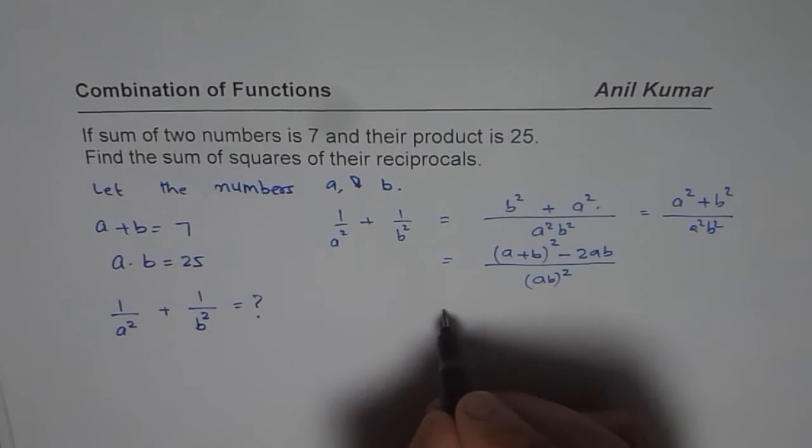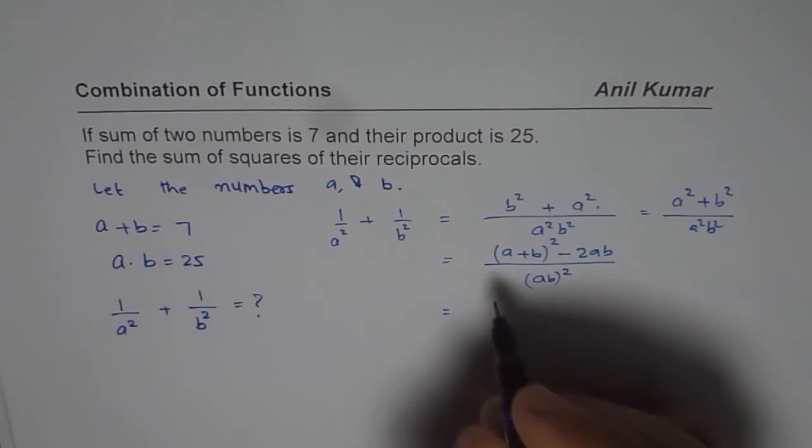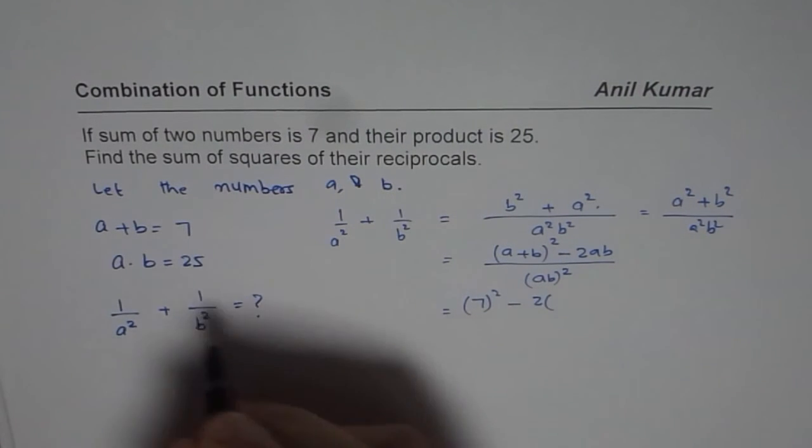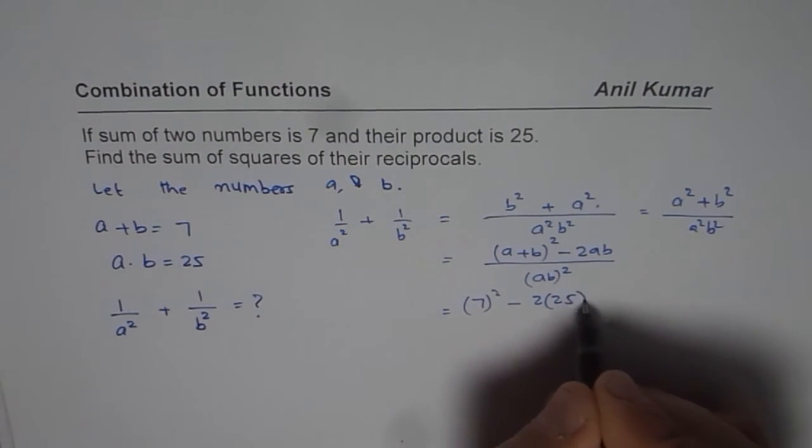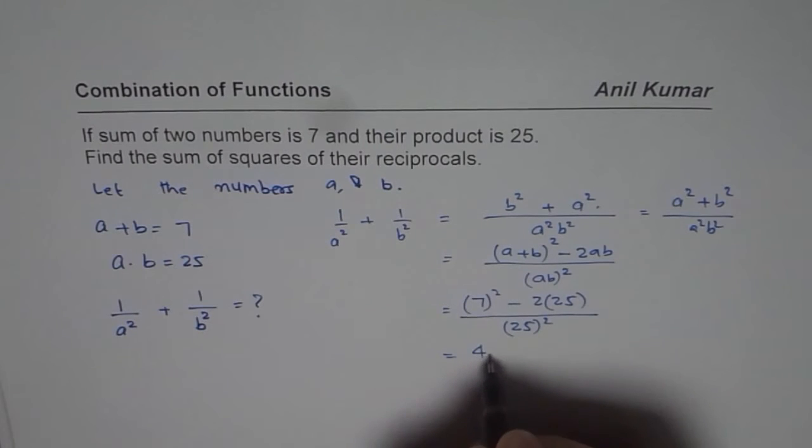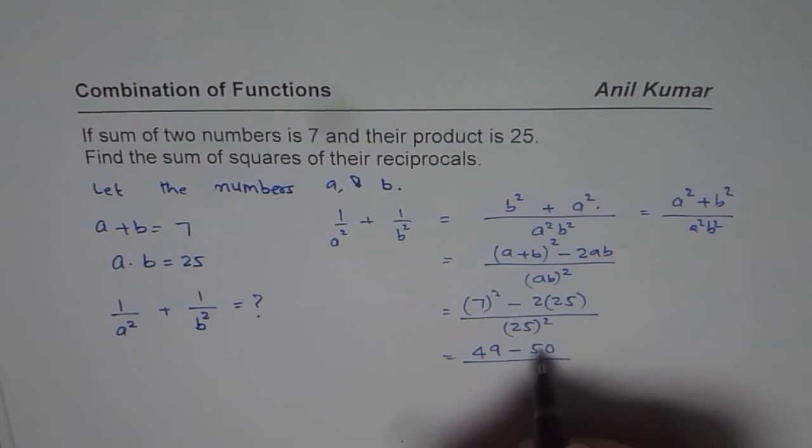Now I know what A plus B is—it is 7. So I will write this as 7 squared minus 2 times product which is 25, divided by 25 squared. Now we can have 49 minus 2 times 25 which is 50, divided by 25 squared which is 625.